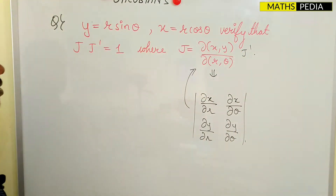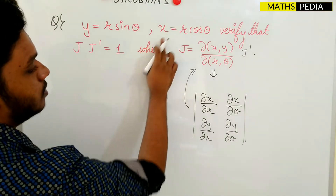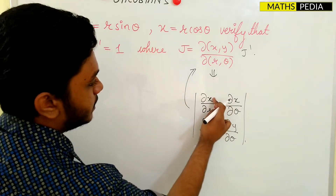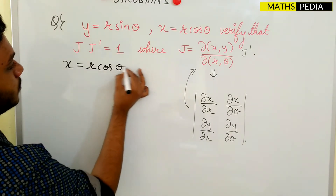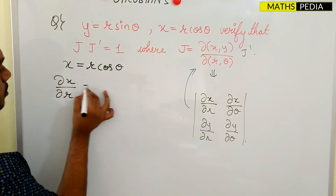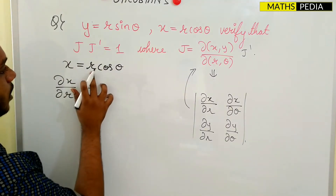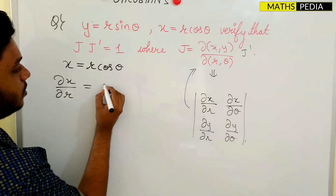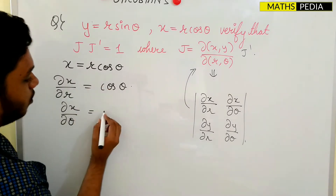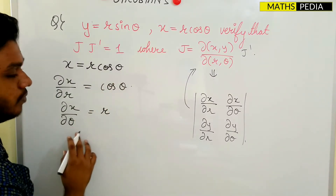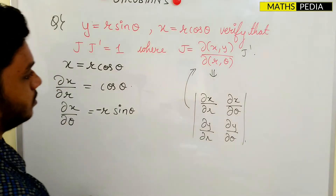For J, we calculate each partial derivative. Since x = r·cosθ, differentiating with respect to r gives ∂x/∂r = cosθ (since r's derivative is 1). Differentiating with respect to θ gives ∂x/∂θ = −r·sinθ (since r is constant, and the derivative of cosθ with respect to θ is −sinθ).